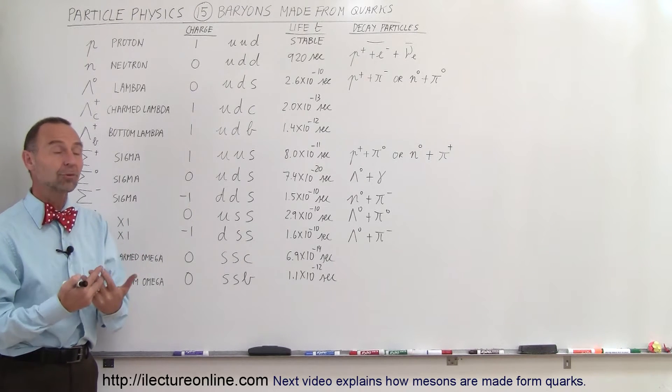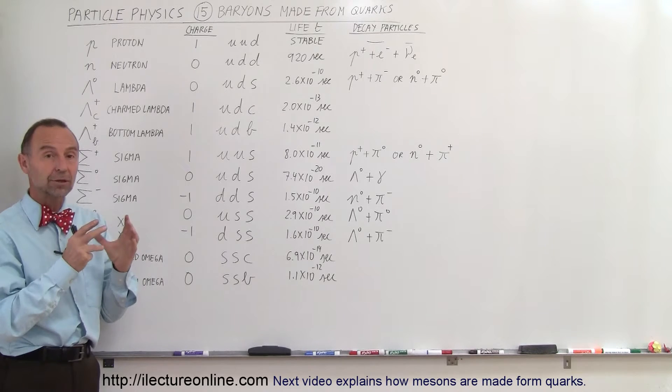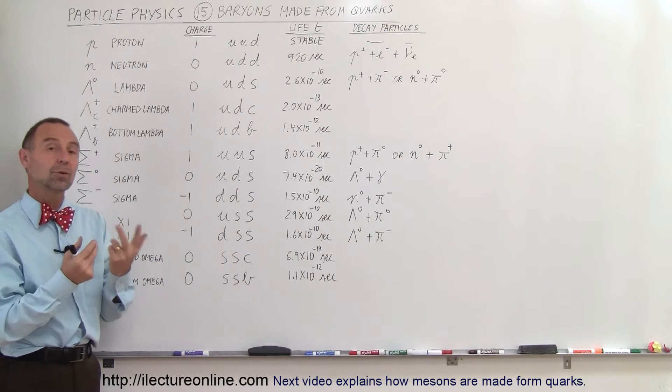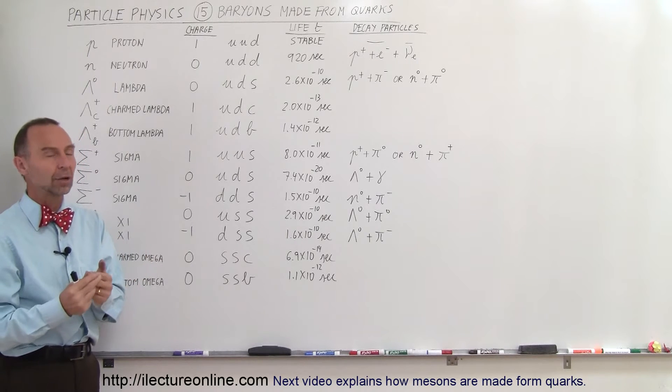Remember that quarks make hadrons, and of course with hadrons you have the baryons which require three quarks, and then you have the mesons which require two quarks, one quark and one antiquark.